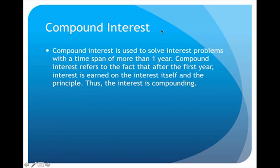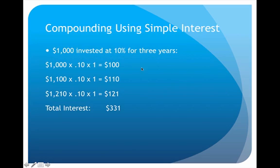Simple interest generally is used for one year or less. But when we deal with things like bonds we're going to have a time span of multiple years. Any time the time span is more than a year we're going to be dealing with compound interest. We could use the simple interest formula to solve compound interest problems, but it would actually be too much work — too much repetitious busy work. For example, say we're going to invest $1,000 at 10% for three years — notice the time span is more than a year.